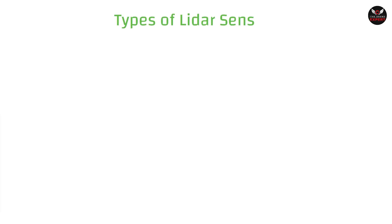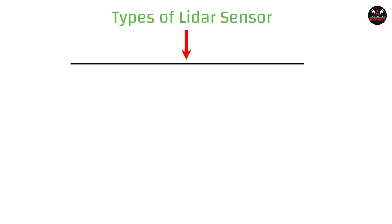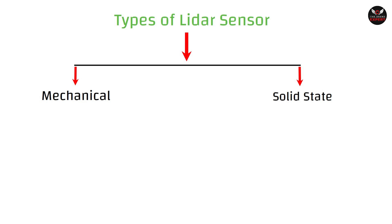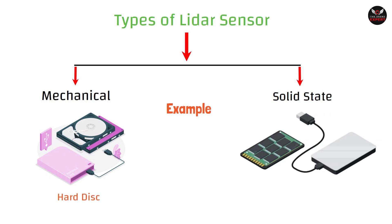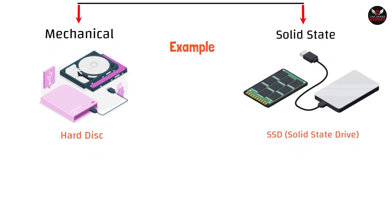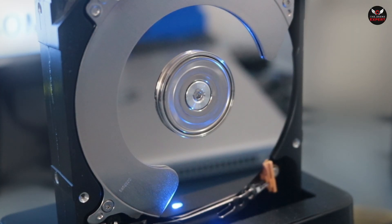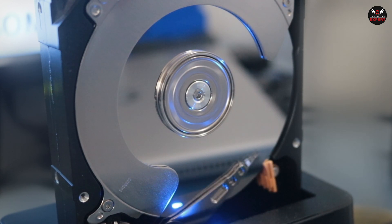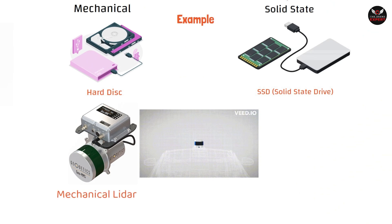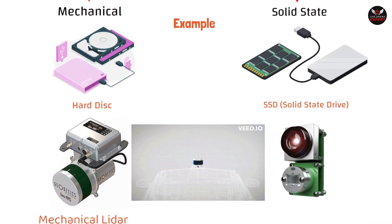Generally, there are two types of LiDAR sensors available in the market: first, mechanical; second, solid state. Let's understand the difference between these two with examples. We all use storage devices — nowadays for storing data, we use hard disk and SSD. A hard disk contains a moving disk that continuously rotates, whereas an SSD or solid state drive has no rotating parts. Similarly, a LiDAR sensor with a rotating part is called a mechanical LiDAR, while one without a rotating part is called a solid state LiDAR.